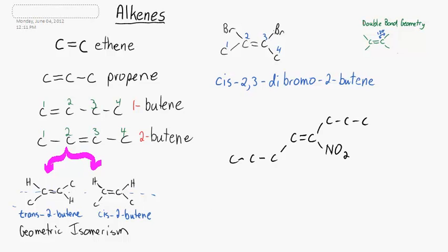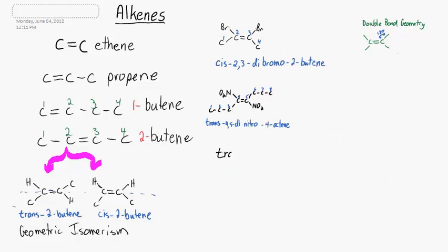Here is one to try. Pause, and then give it a shot. Then start the video again. Numbering this, I get an octene for all eight carbons. The double bond begins on carbon-4, and the nitro side groups are on both carbon-4 and carbon-5. It's trans.